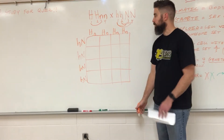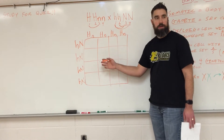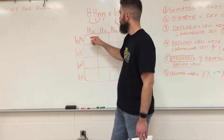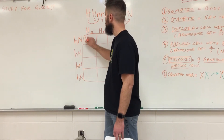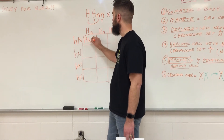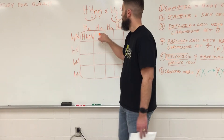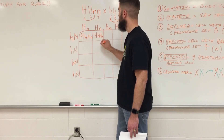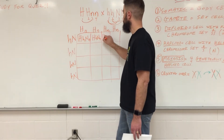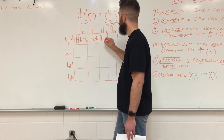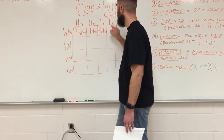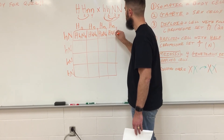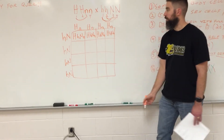Now we put our alleles back together in the squares — I'm not going to do the whole thing, but you can see: put your H's back together — big H, little h; put your N's back together — big N, little n. Same thing here: big H, little h, big N, little n. Big H, little h, big N, little n. And one more time: big H, little h, big N, little n. You just fill them back in all the way down.